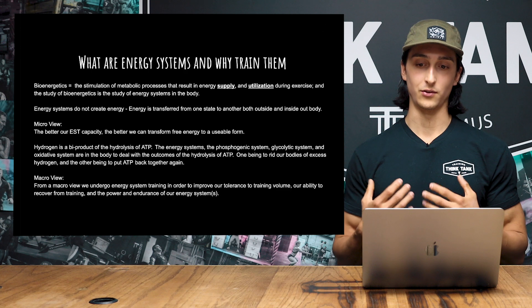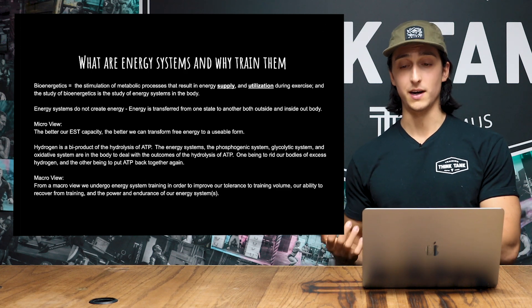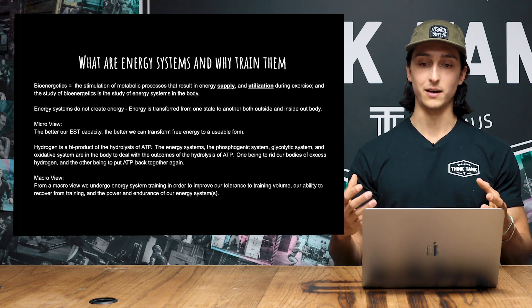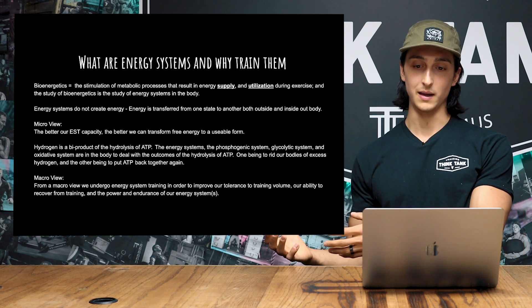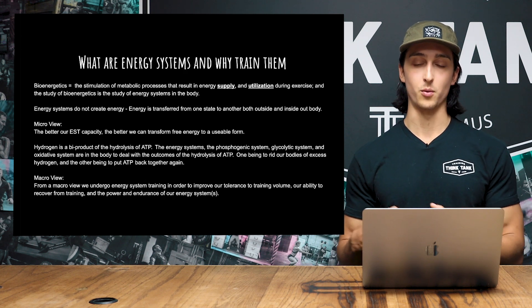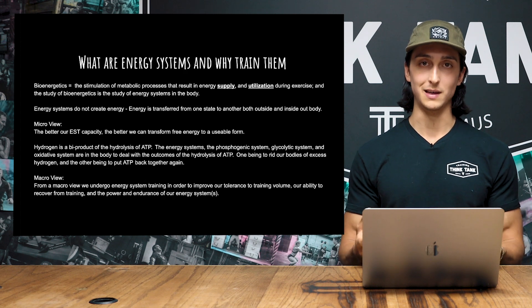At the simplest level, the food that we eat is a source of electrons, and we breathe in oxygen. Those electrons and oxygen are going to meet inside of the mitochondria and transform free energy into a form we could use in our body. So the better our energy system capacity, the better we could transform free energy into a usable form, which is restocking ATP in the body.